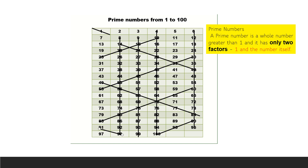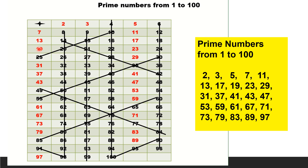The next 7 multiples are 91 and 98. We have now crossed out all the composite numbers. The leftover numbers are the prime numbers from 1 to 100. There are 25 prime numbers from 1 to 100, and they are: